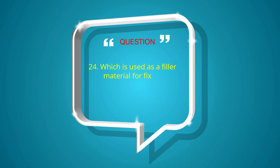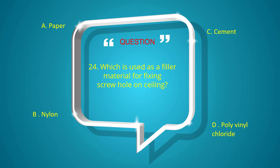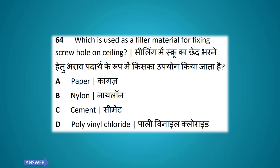Which is used as a filler material for fixing a screw hole on a ceiling? Options: paper, nylon, cement, polyvinyl chloride. The answer is nylon.